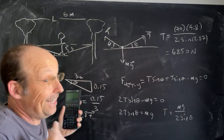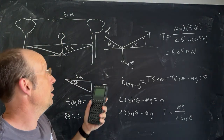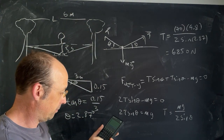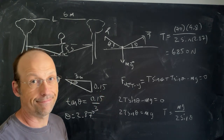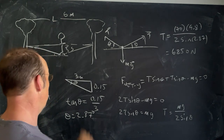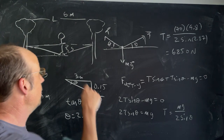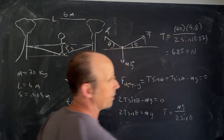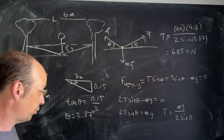That's huge! For comparison, if the person just hung from the rope, the tension would equal their weight: 70 times 9.8 equals 686 Newtons. So the tightrope tension is about ten times their weight. The smaller that angle, the larger the tension — so you really can't just do whatever you want with a tightrope.